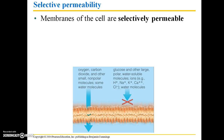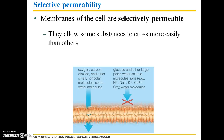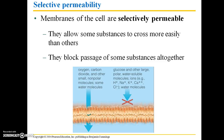Membranes of the cell are selectively permeable. This means that they allow some substances to cross more easily than others, and they block passage of some substances altogether. Things that you need for your cells on a day-to-day basis, such as oxygen, carbon dioxide, and other small non-polar molecules, as well as some water molecules, can pass freely through the lipid bilayer.